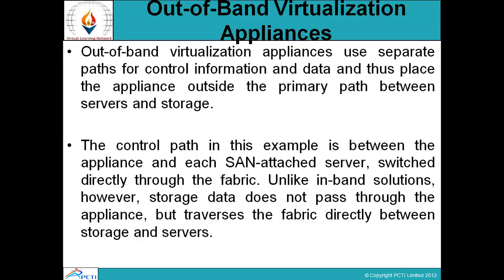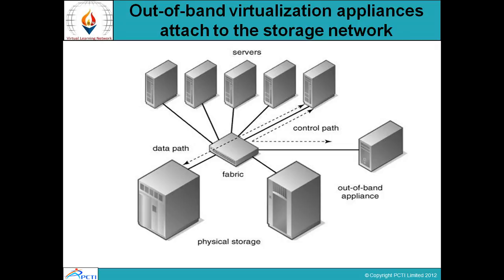Out-band appliance vendors point out that this eliminates potential bottleneck issues, since only small amounts of metadata are exchanged between the appliance and the server. The out-band virtualization appliance places itself outside the primary path between server and storage, and the appliance connects directly to the fabric switch — unlike an in-band solution. A diagram shows the physical access path of the out-band appliance and the physical storage area connected.